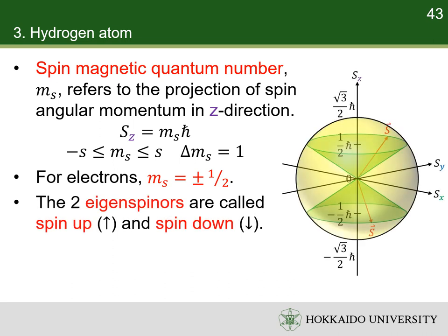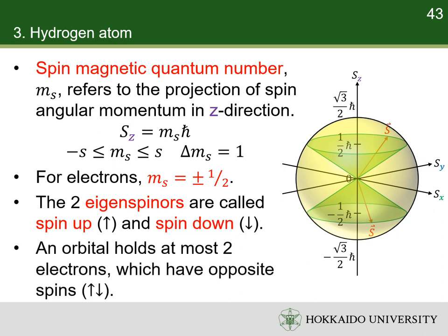In this illustration, the sphere represents the magnitude of the spin angular momentum of the electron. The cones represent possible orientations of the spin angular momentum vectors. According to the Pauli exclusion principle, two electrons cannot occupy the same state. Therefore, if two electrons occupy the same orbital, they must have opposite spins.